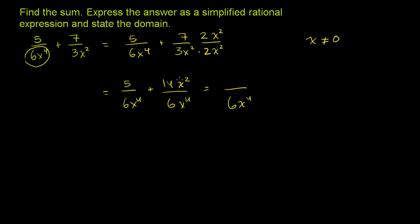And we can just add the numerator. So it's 5 plus 14x squared. Or I like to write the higher degree term first: 14x squared plus 5.